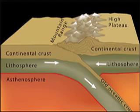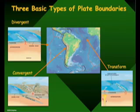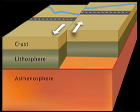Transform faults — that's like San Andreas kind of motion: side-by-side, horizontal motions across a vertical fault.